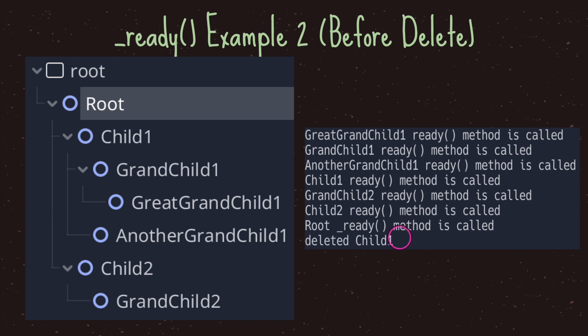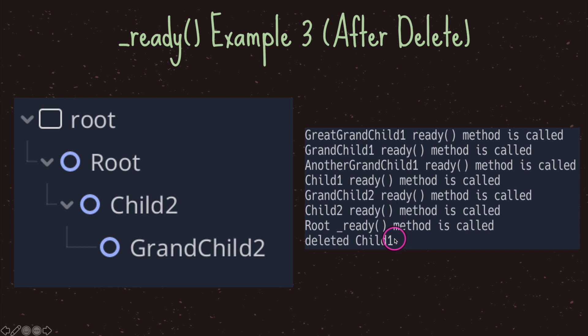Moving on — at the end of our ready function I have deleted child one, so all of child one's children will disappear. I went ahead and removed the children of child one, and you'll notice in our scene tree they're no longer there. Child one and all of its children are now inactive but have not been deleted from memory. Keep that in mind: just because a node is inactive and removed from the scene tree does not mean it's been removed from memory.